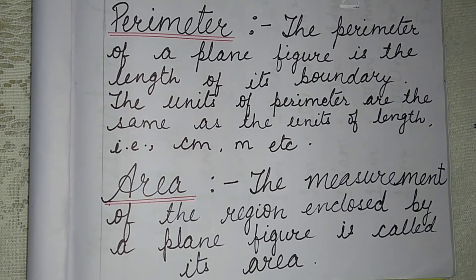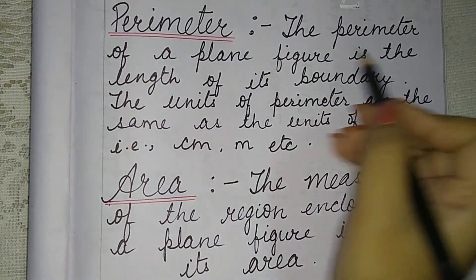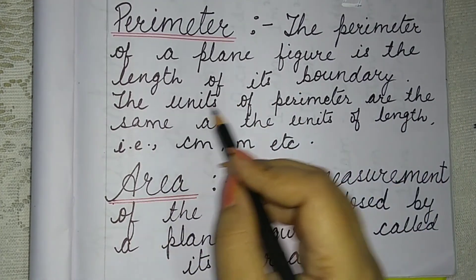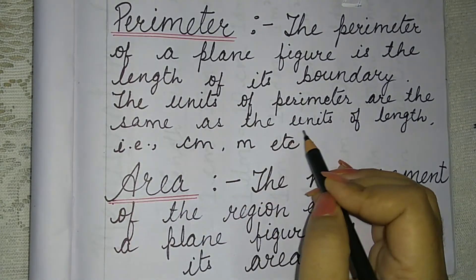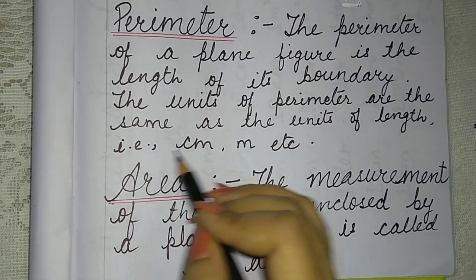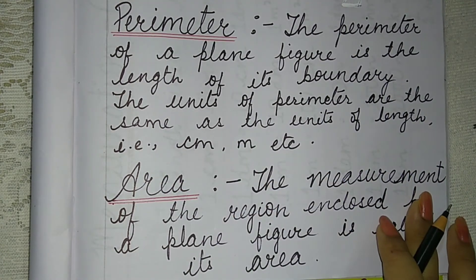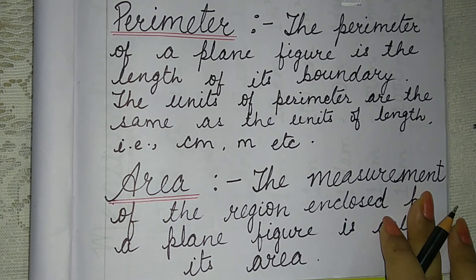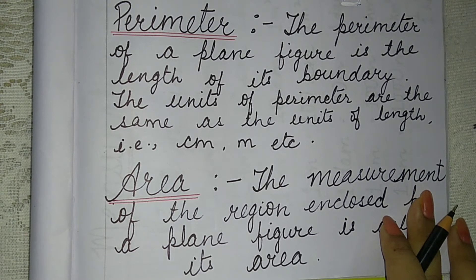Next comes to the perimeter. The perimeter of a plane figure is the length of its boundary. The units of perimeter are same as the units of length, that is centimeter, meter, etc. Perimeter means any plane figure, length of its boundary. It means the boundary wall, we call the perimeter.